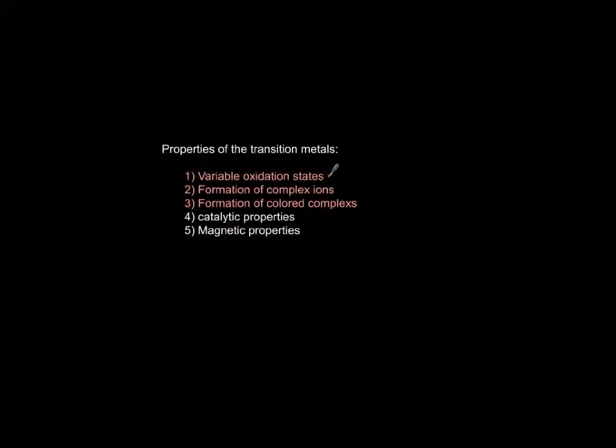Transition metals have variable oxidation states, form complex ions, and their complex ions are colored. Now let's look at the catalytic property, which is redundant for you guys.